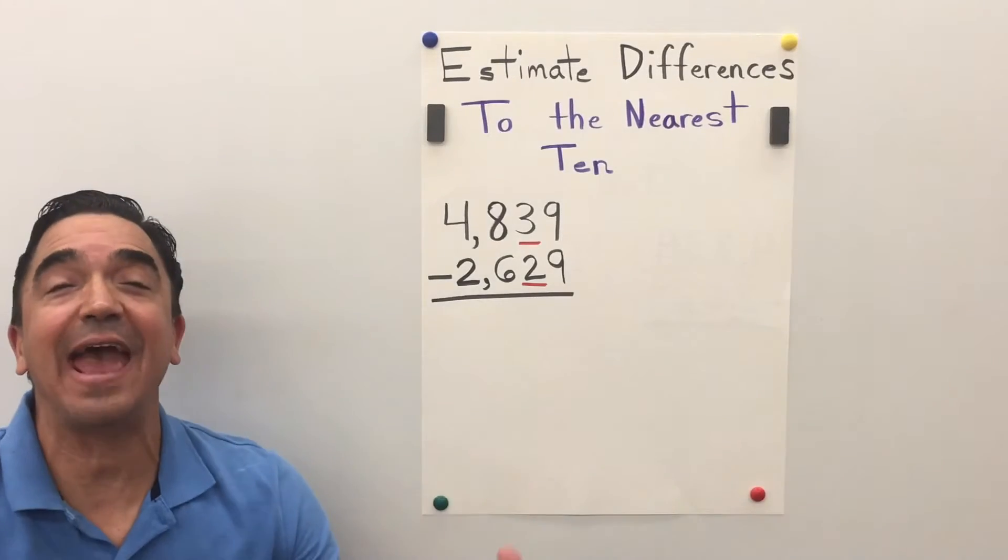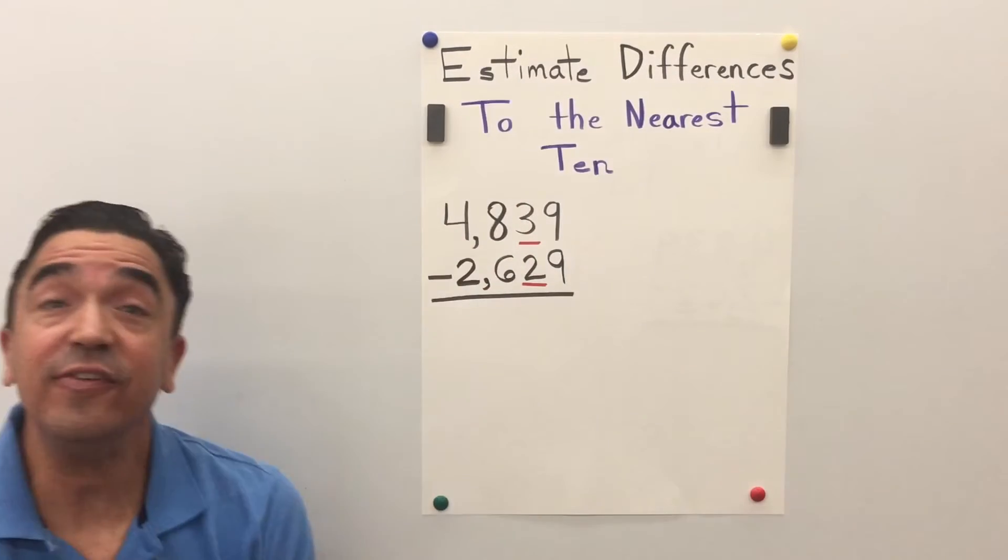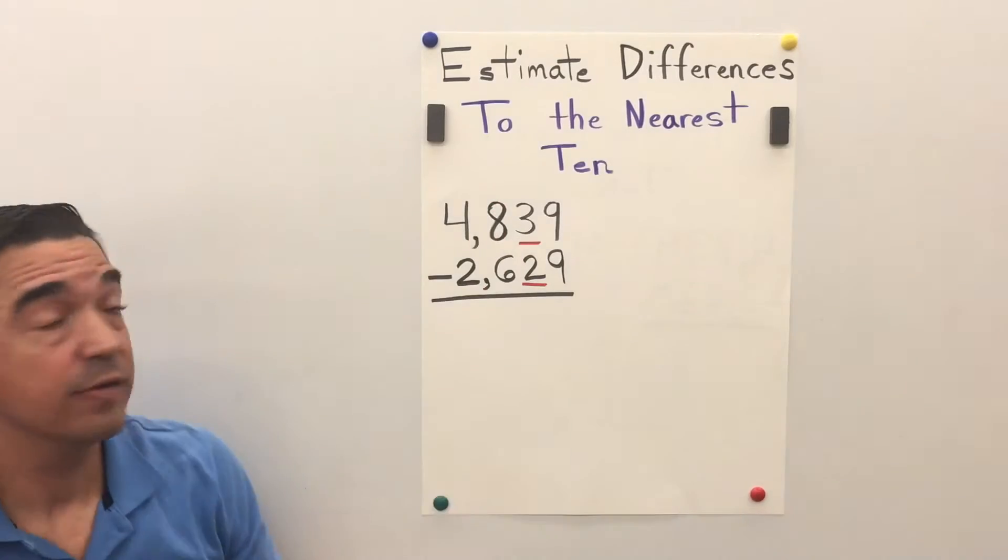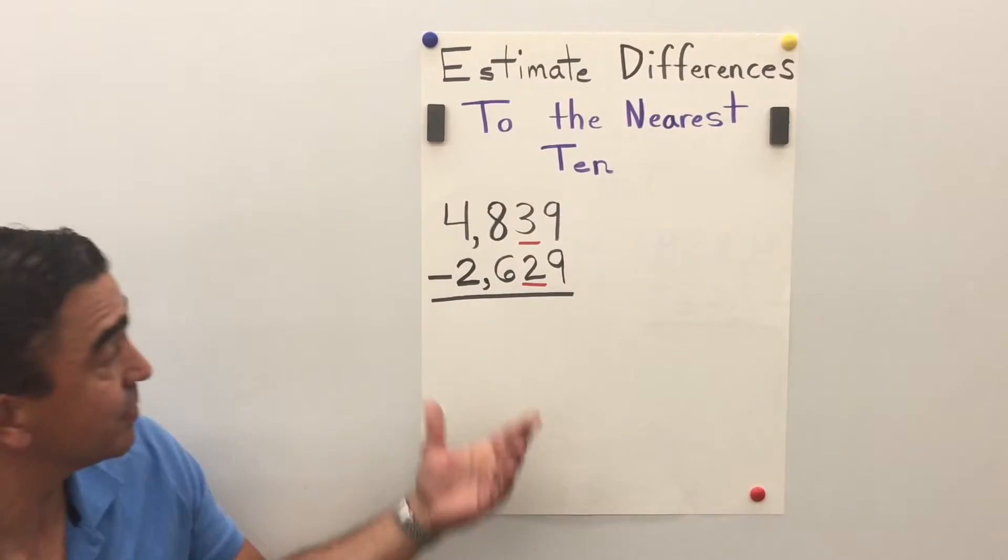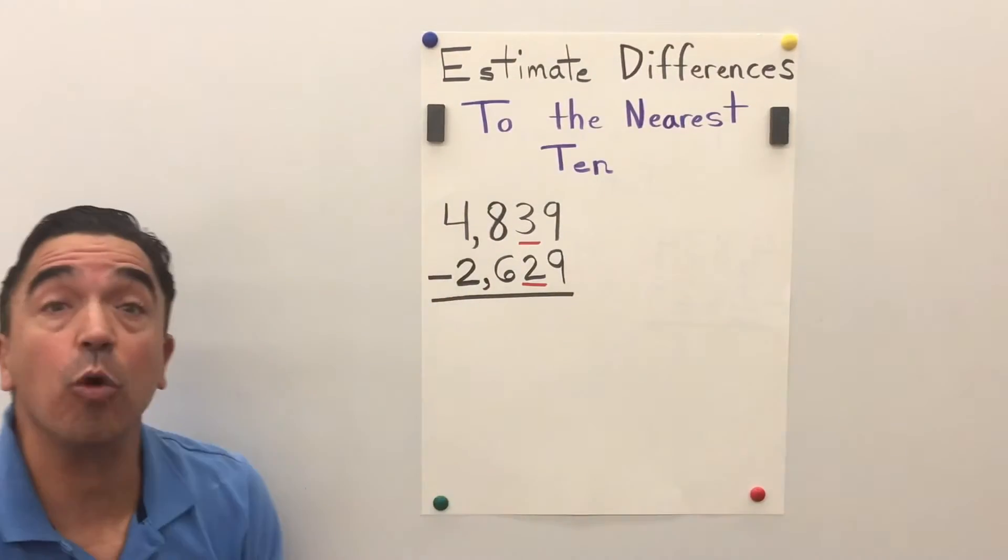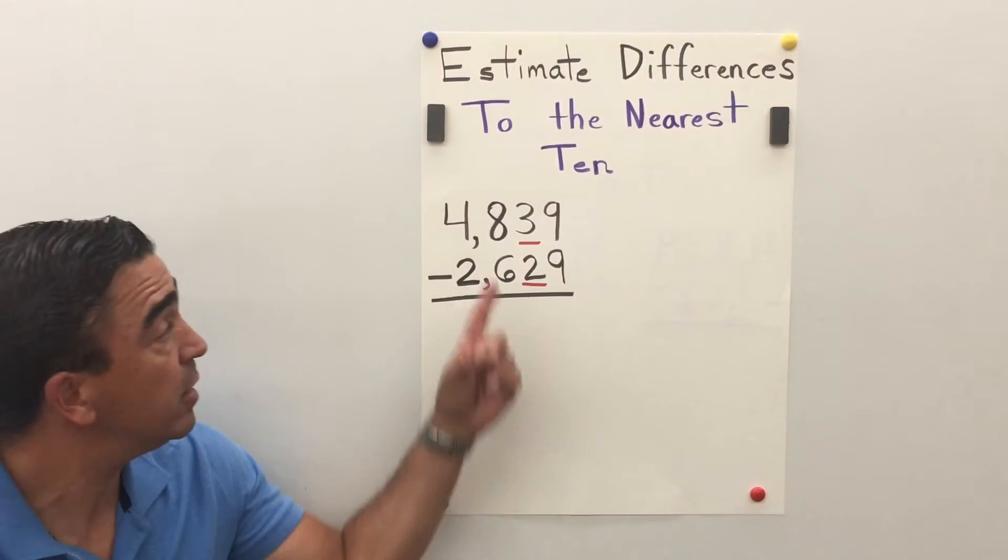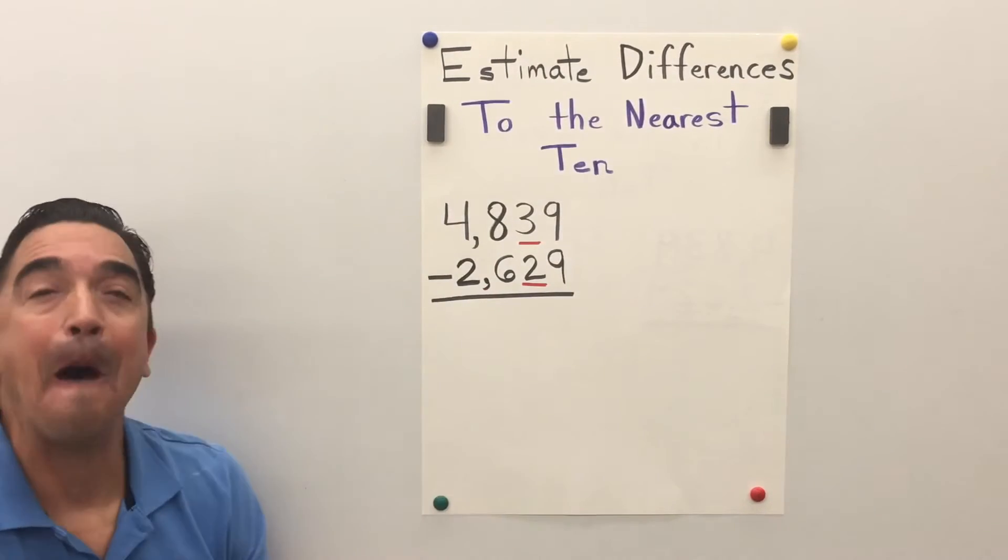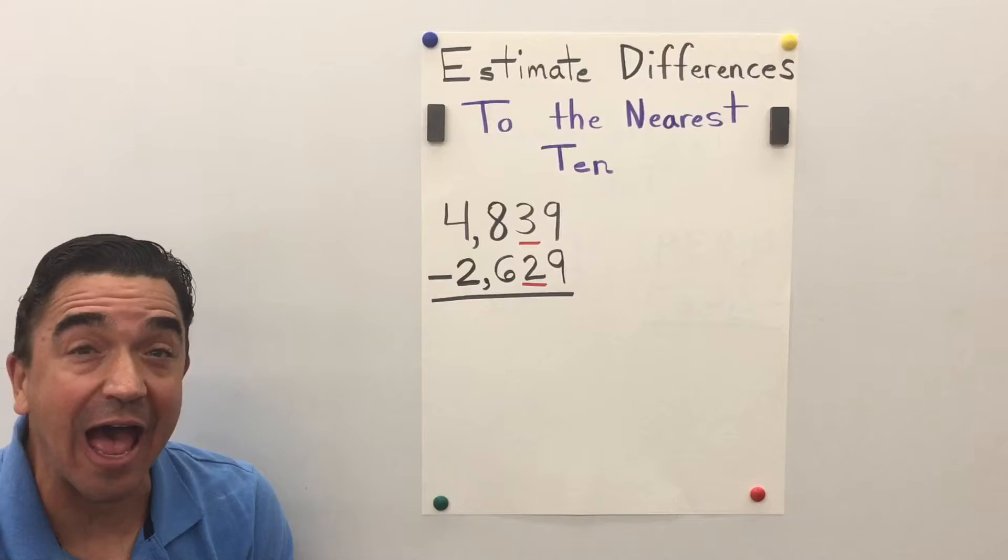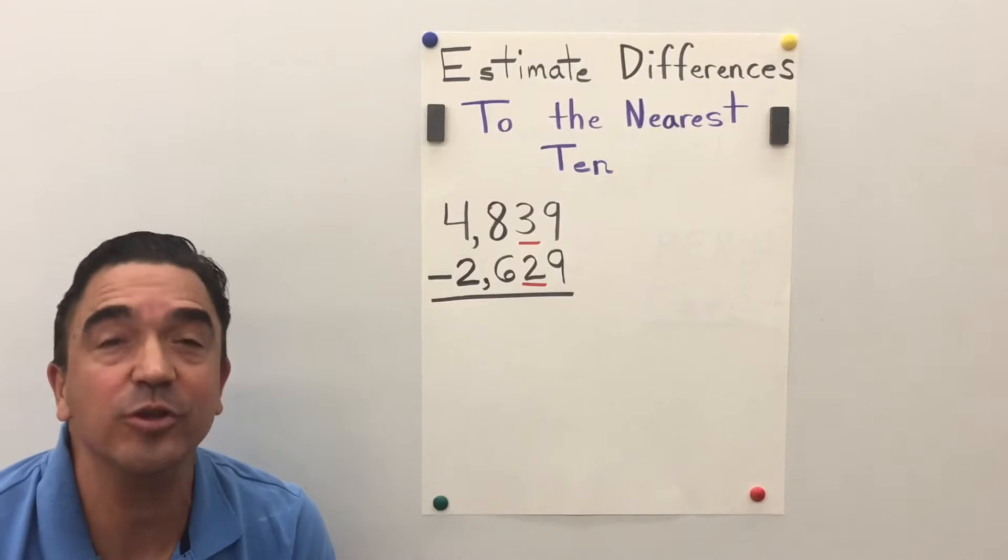Hi there, Coach Mike, and today we will be estimating differences to the nearest ten. Here's our problem: 4,839 minus 2,629.